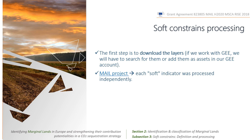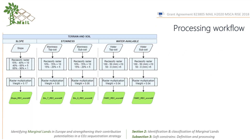To start with the processing of the layers, the first step is to download them, or if you work with Google Earth Engine, you will have to search for them and add them as an asset in your Google Earth account. In the main project, we performed a processing flow in which each soft indicator was processed independently. In the figure, we present an example of the processing flow for three indicators.